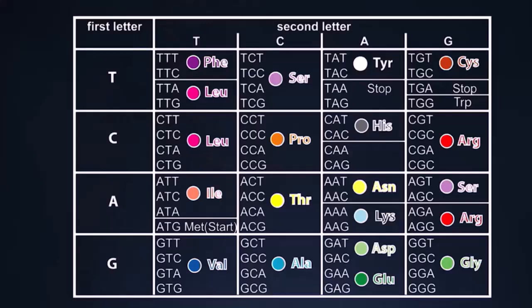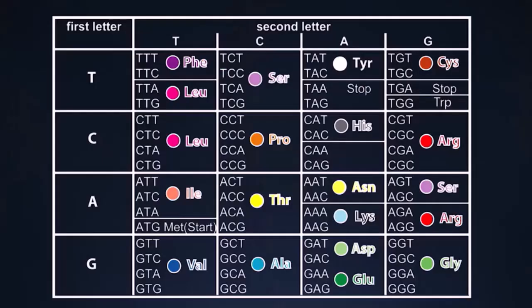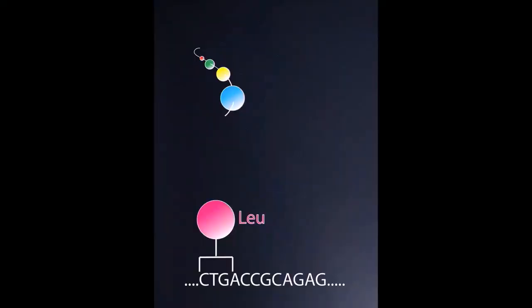This code was unraveled in the 1960s. Imagine we are making a protein. We have already placed some amino acids and now need to add the next one — the amino acid coded by the letters CTG. We look it up in the table. What amino acid is coded by CTG? Leucine — indeed. So we add leucine to the growing chain.